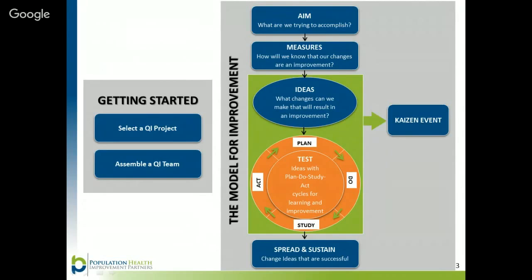The PDSA cycle allows your team to plan how you will test a change, try the change on a small scale, make observations about the results of a change, and then take action based on what was learned by adapting, adopting, or abandoning a change. Basically, the PDSA cycle is the scientific method used to rapidly learn and take action.